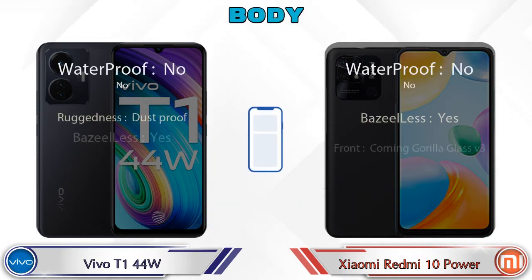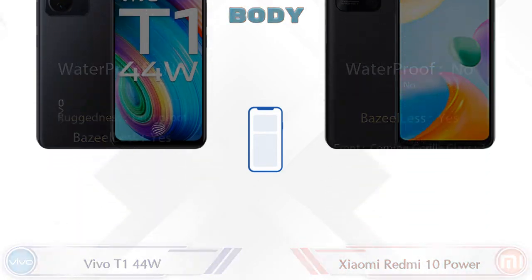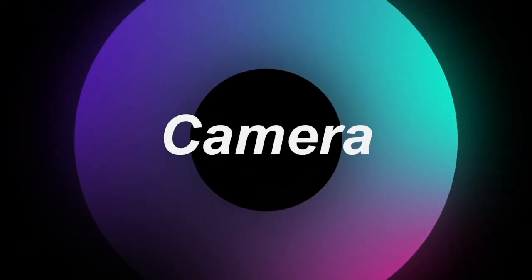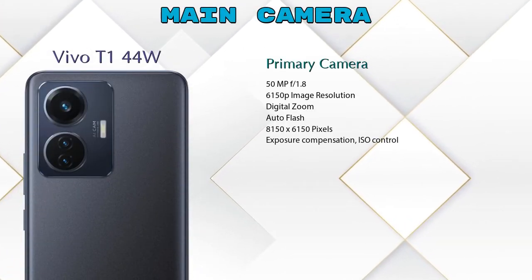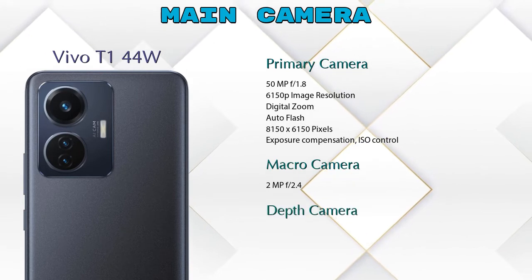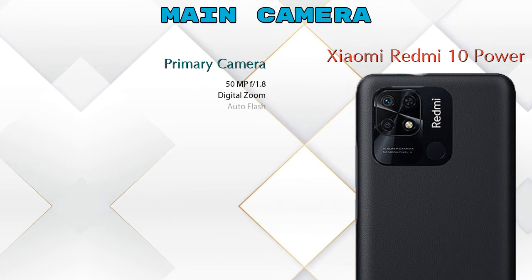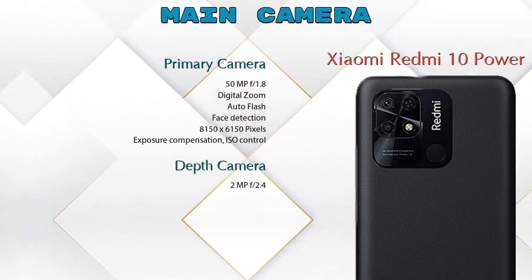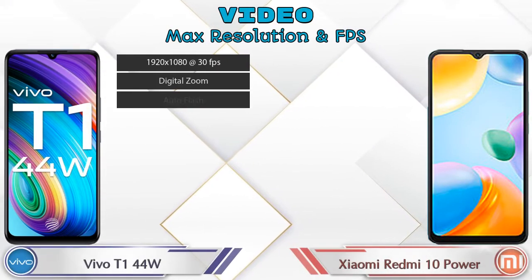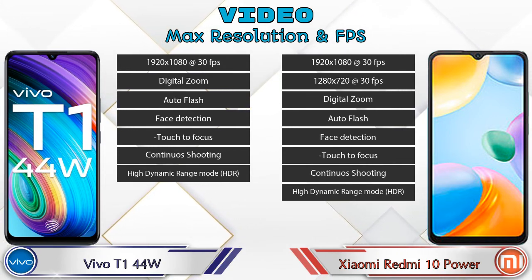Let's see the details about our favorite feature — the camera. First, talking about the rear camera: the T1 44 Watt has three cameras — a primary camera, macro camera, and depth camera. The Redmi 10 Power has two cameras — a primary camera and a depth camera. For video camera features, the T1 44 Watt has 7 and the Redmi 10 Power has 8 different types of features available.